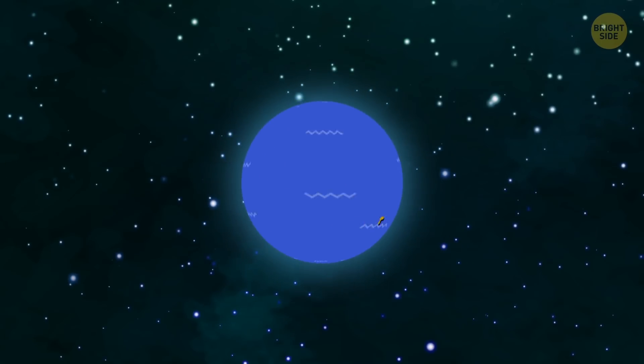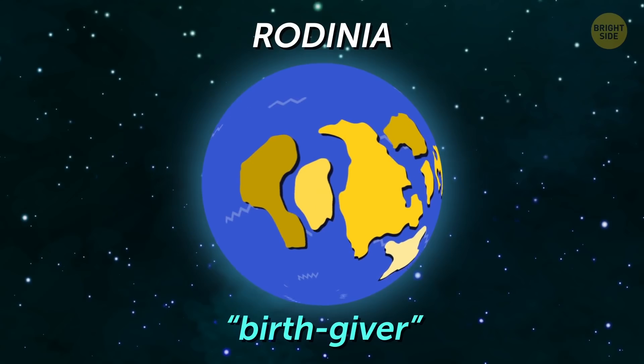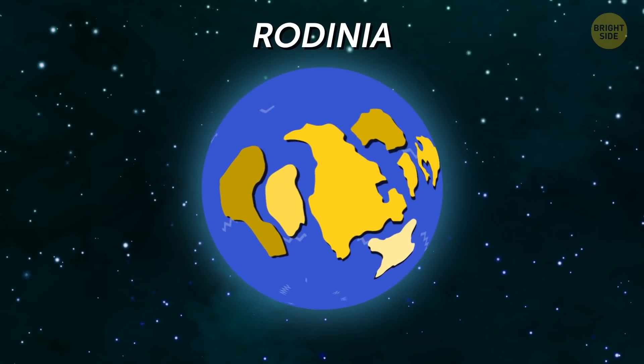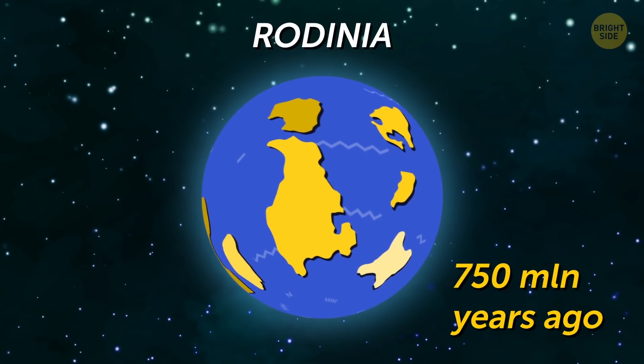Then after some more million years, Rodinia, roughly translated as birth-giver, appeared. It collected most of the Earth's landmasses and then split around 750 million years ago.